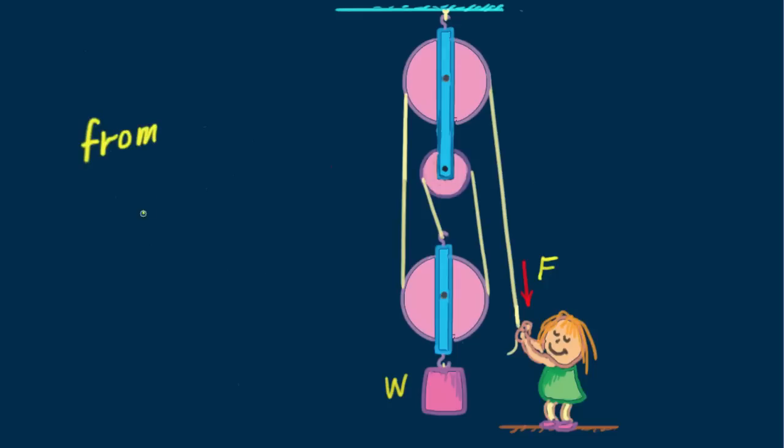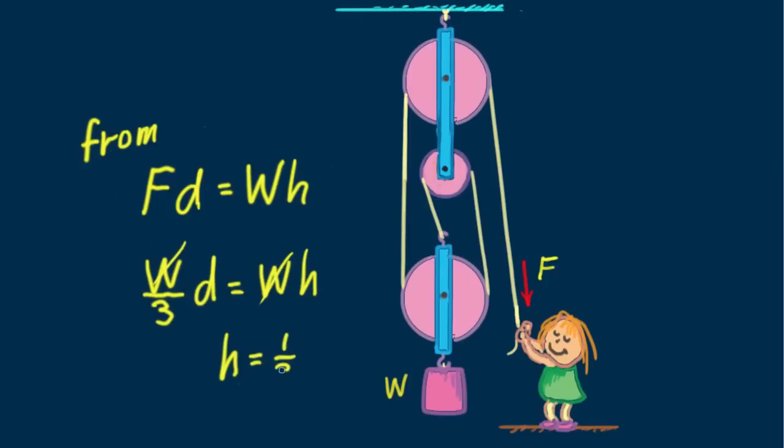And from F times D equals W times H. W over 3 times D equals W times H, where we see H equals 1 third D. So for every 30 centimeters of downward pull, Nellie raises the load 1 third, 10 centimeters.